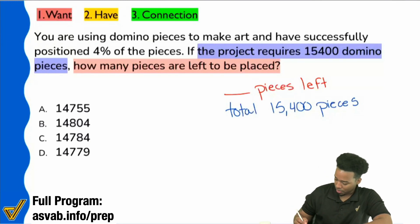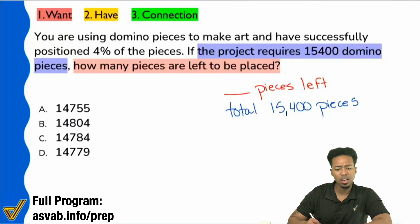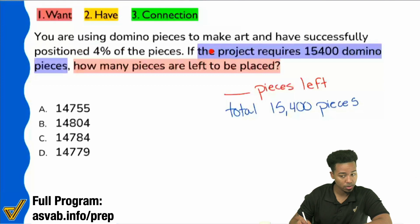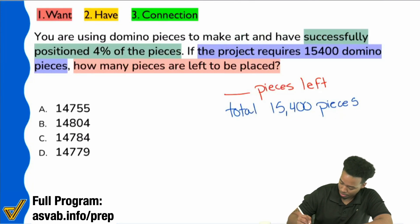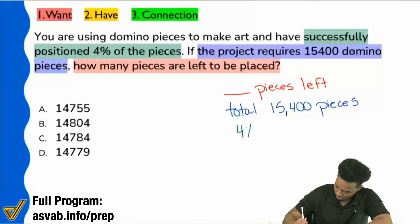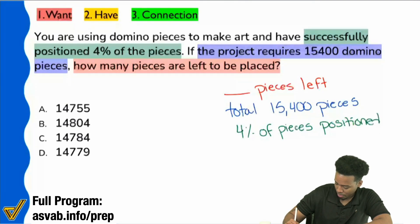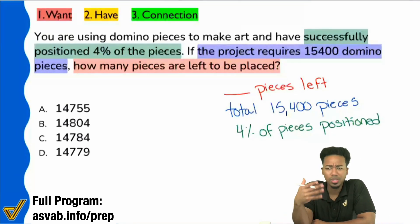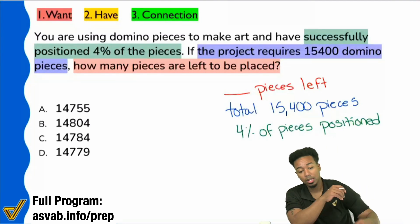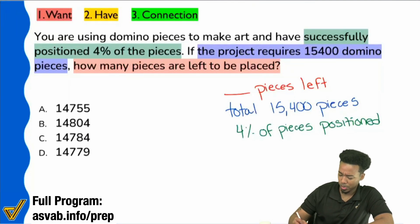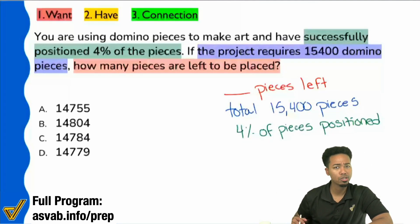Reading from the beginning, it says you're using domino pieces to make art, and you've successfully positioned 4% of the pieces. We have this percent given to us, so it's natural to think that might be the percent we're going to use in the formula. Now, if we look at the total 15,400 pieces, what would you categorize that as — the original, or the result?